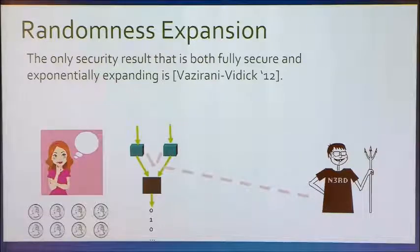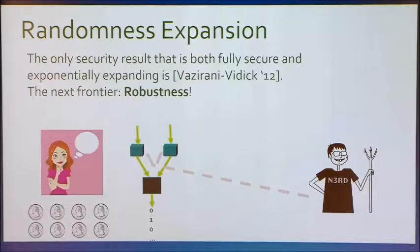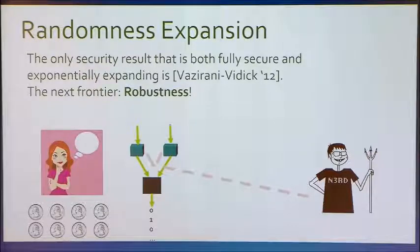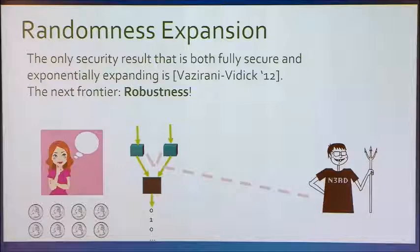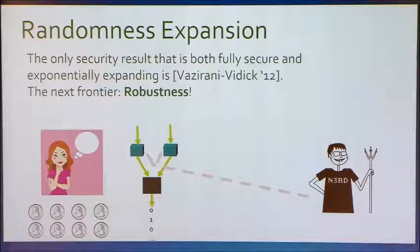When we learned about this result, the next frontier we saw was robustness. The Thomas-Umesh result is non-robust: if the device performs perfectly at, say, the CHSH game, it will pass the protocol with probability approaching one. But if there's a constant rate of error, even a small constant rate, it will pass the protocol with probability approaching zero as the number of iterations increases. So the next frontier for us was looking for a protocol that will permit some non-zero level of error in the device and will still be able to output nearly uniformly random bits at the end.